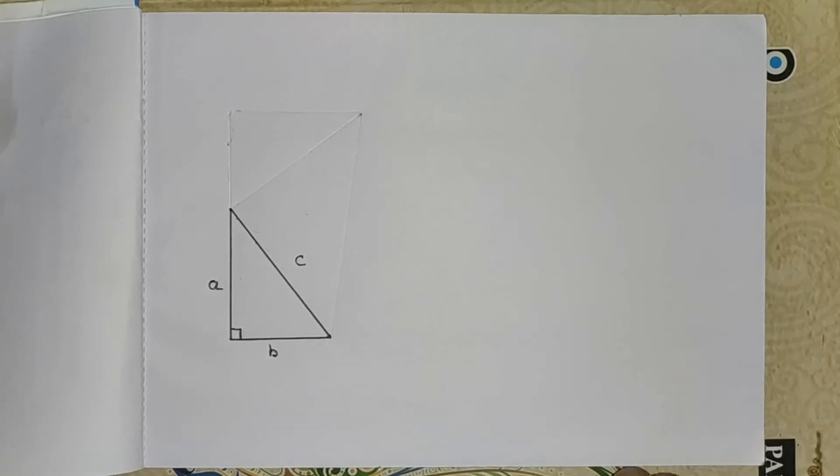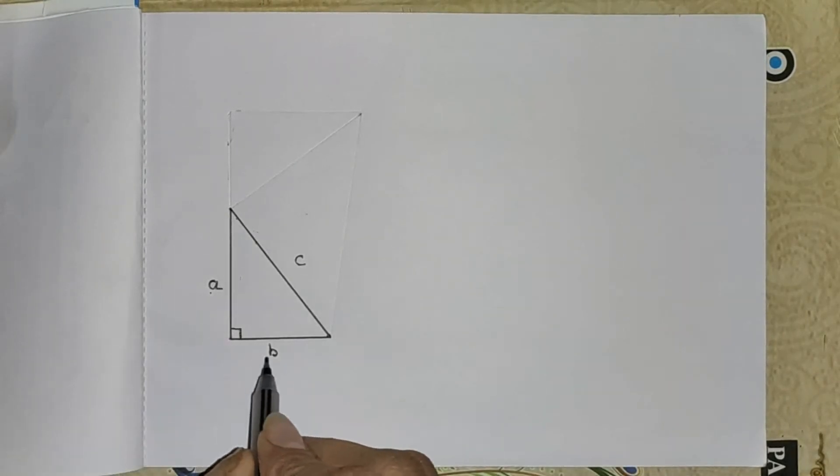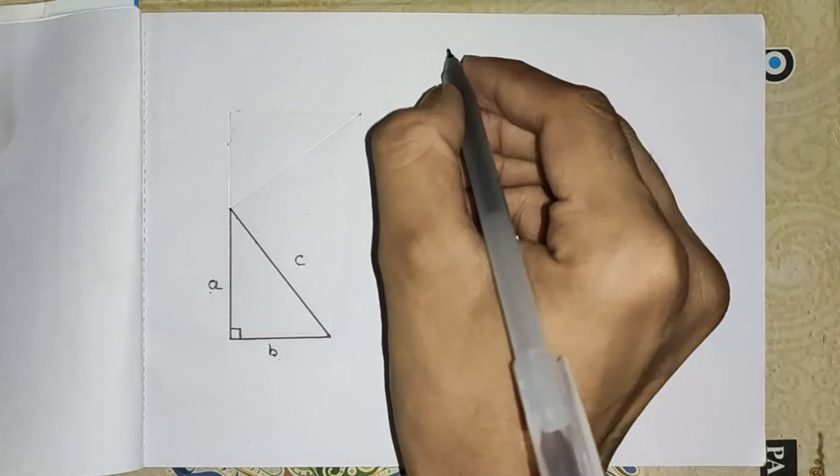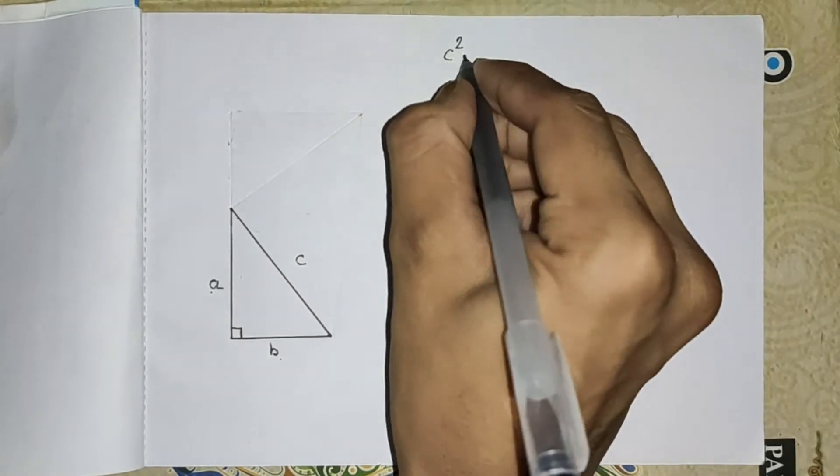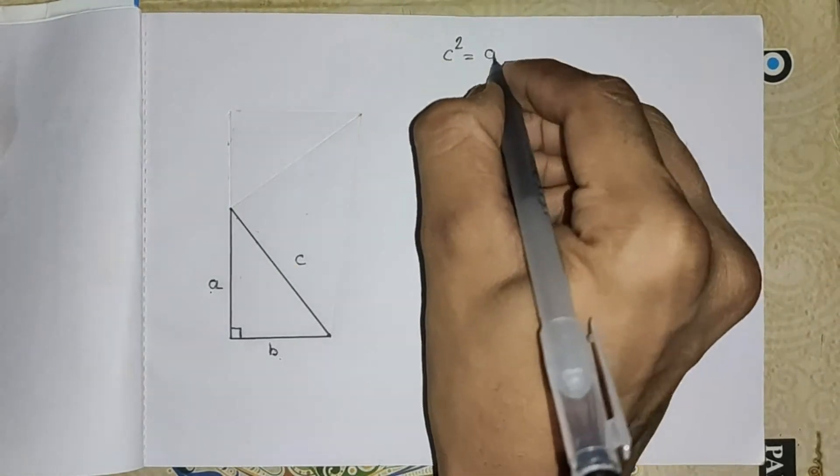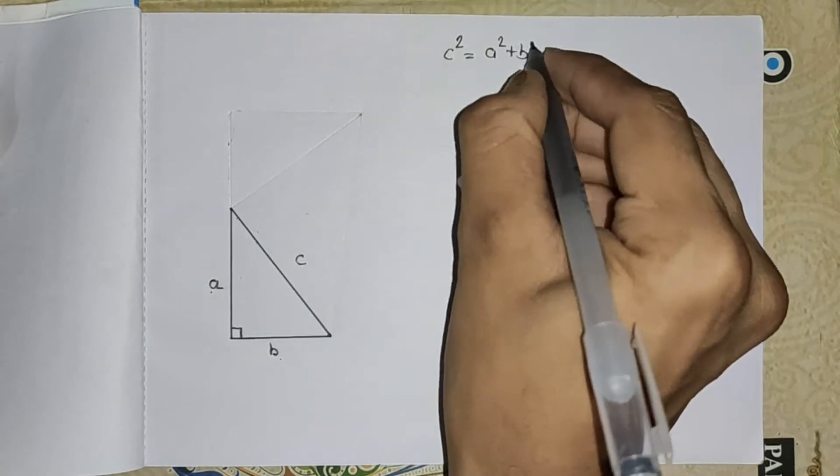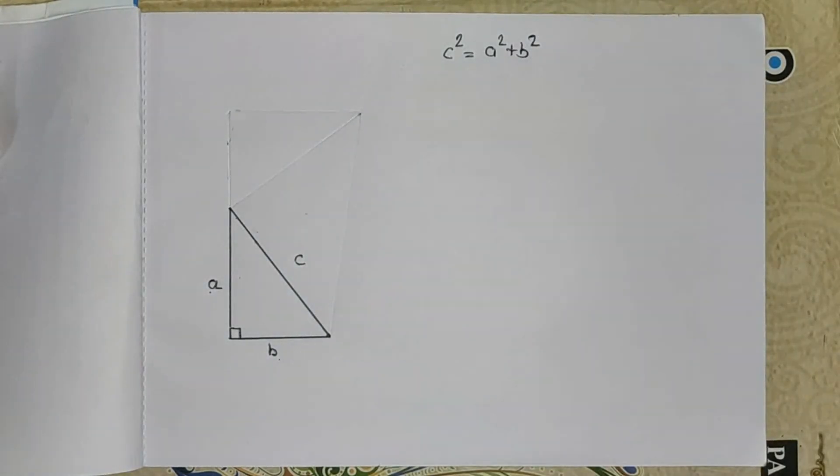In this right angle triangle, sides a and b make 90 degrees, so c will become the hypotenuse. According to Pythagoras theorem, c square equals a square plus b square, but how we can prove this very famous and ancient theorem?